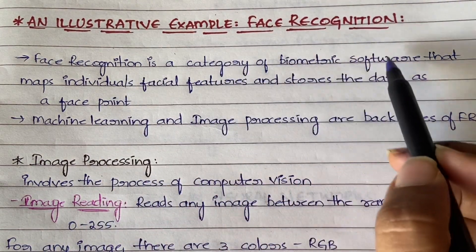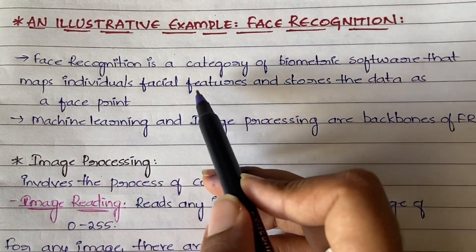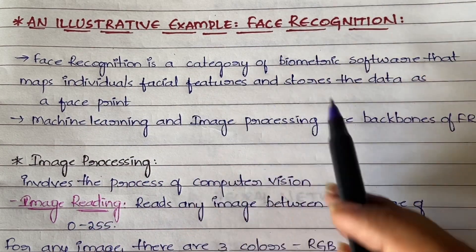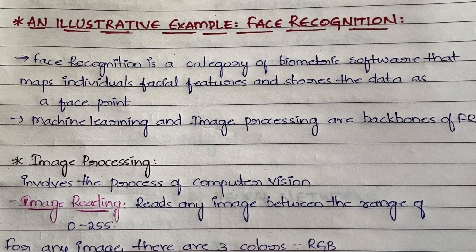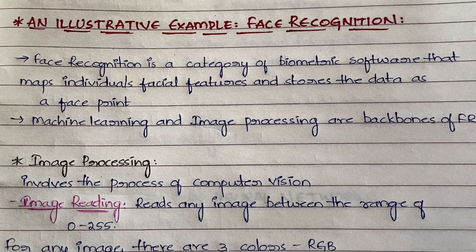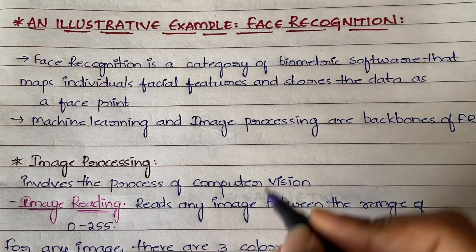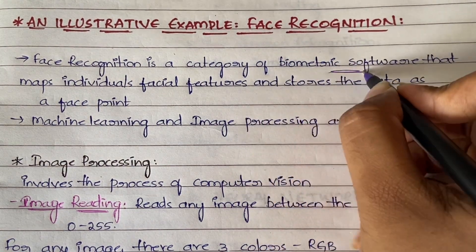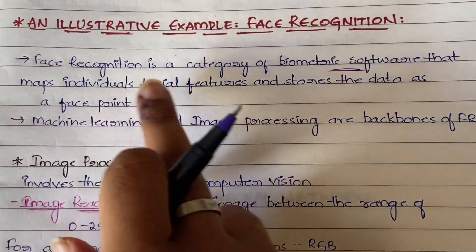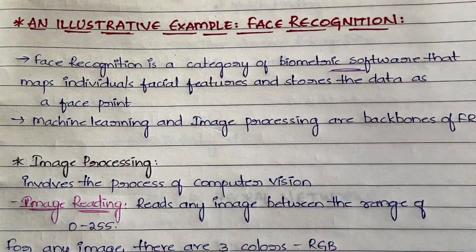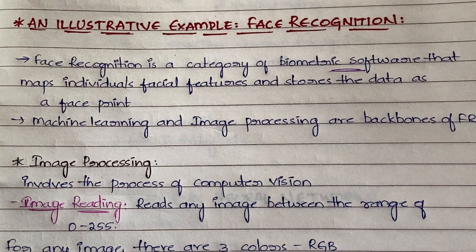Face recognition is a category of biometric software that maps an individual's facial features and stores the data as a face print. A very common example of face recognition is our phone lock system. It maps and reads the individual's facial features — when we are adding face recognition to our phone, the front camera captures it.